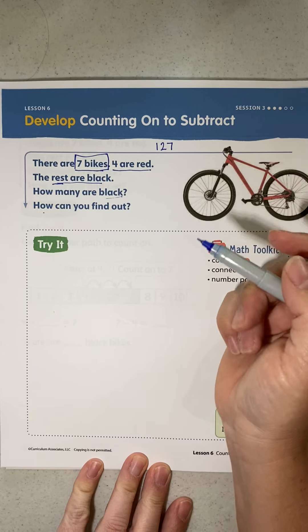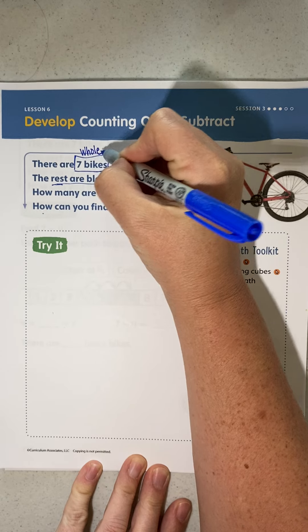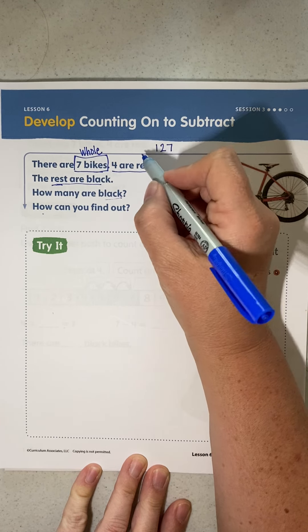That's how many there are in all, right? So that has to be our whole. Four of those seven bikes are red.